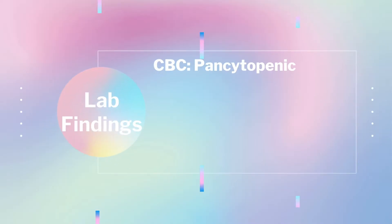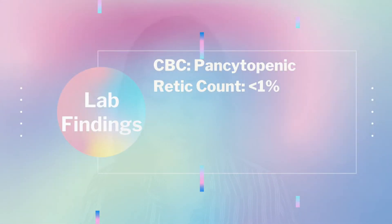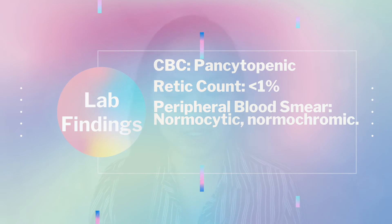Lab findings include a CBC showing pancytopenia — low RBC count, low WBC count, and low platelets — with a corrected reticulocyte count of less than one percent. On the peripheral blood smear, RBCs appear mononormocytic and normochromic — they look normal but there are not many of them compared to a normal smear.